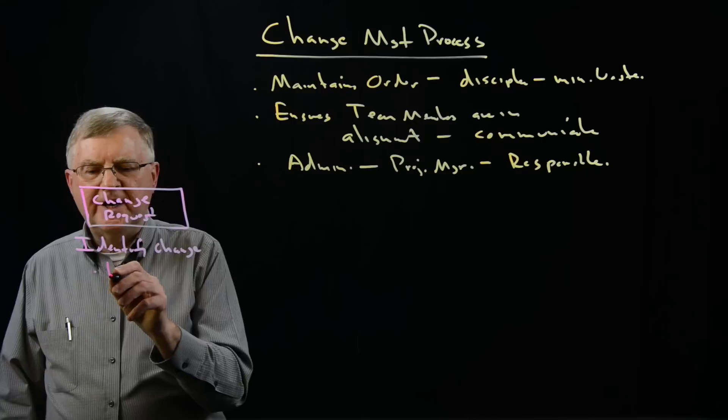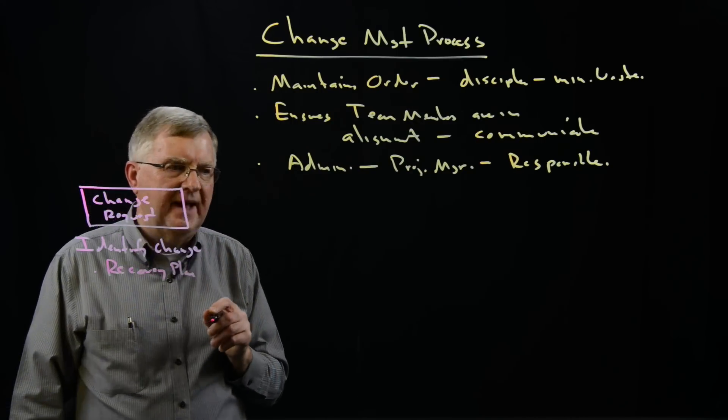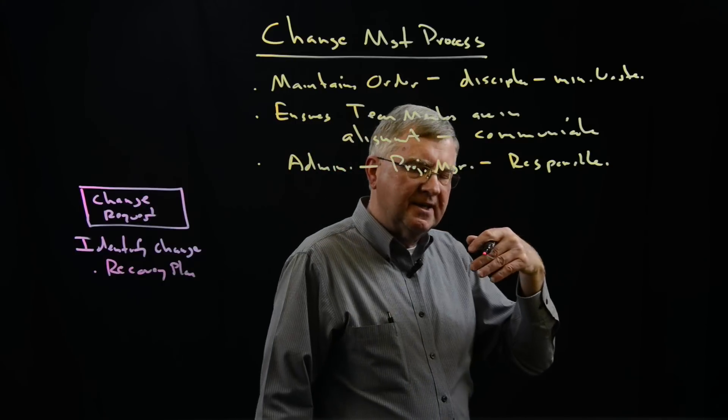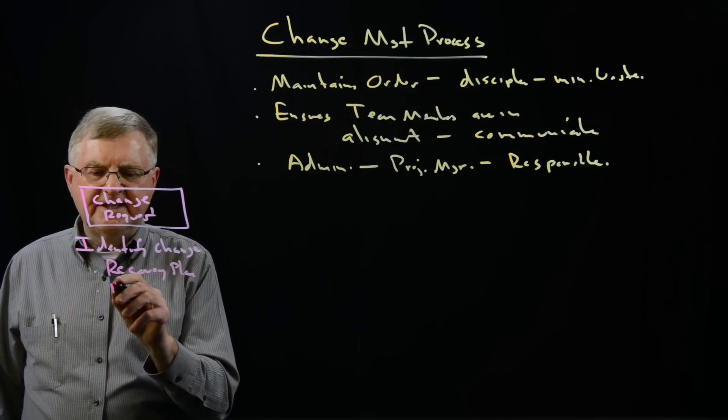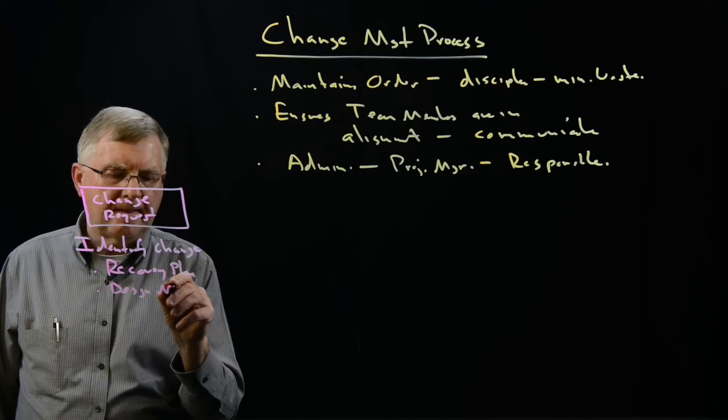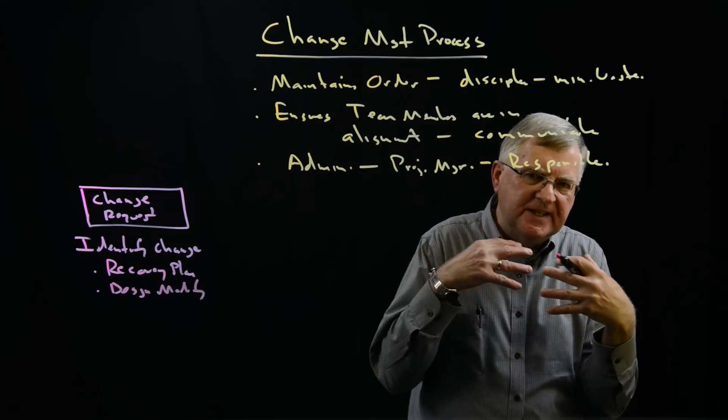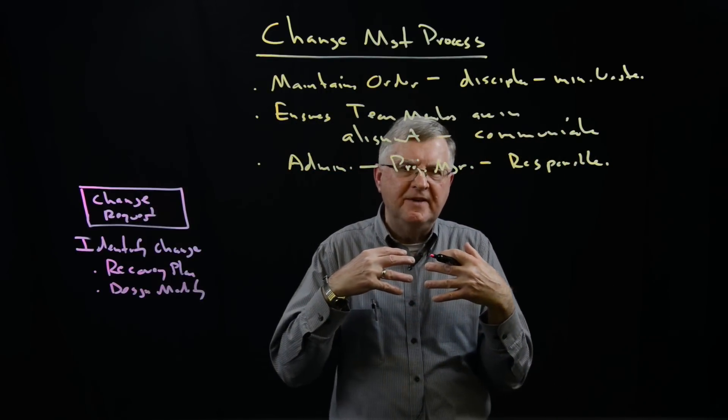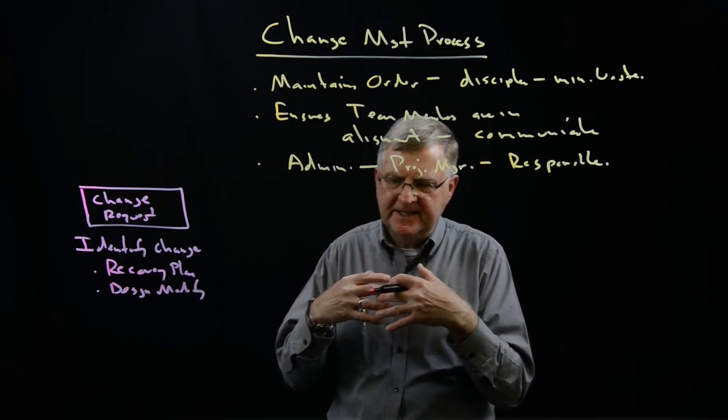A change request could be anything from a recovery plan, like we previously talked about because we're falling behind schedule, or modification of the design. We might modify the design because parts don't fit together, or perhaps we're having difficulty in terms of test performance, finding they're not meeting our design intent.